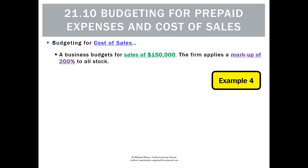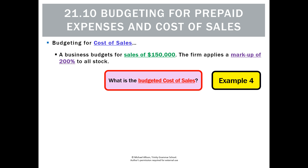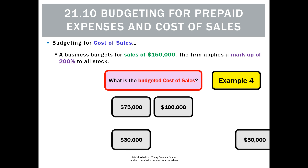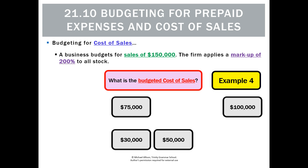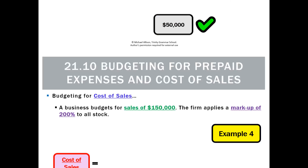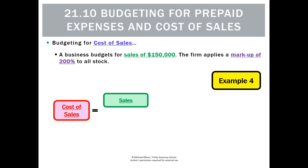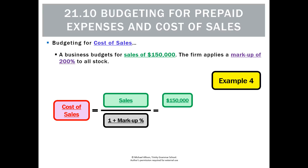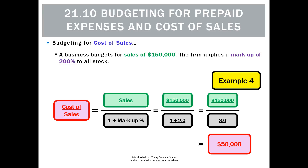This time we're given sales of $150,000 and a markup of 200%. Looking at it, you might think that's a double markup, so the answer must be $75,000. Our options are $75,000, $100,000, $30,000, or $50,000. Using our formula: cost of sales = sales ÷ (1 + markup) = 150,000 ÷ (1 + 2.0) = 150,000 ÷ 3 = $50,000.